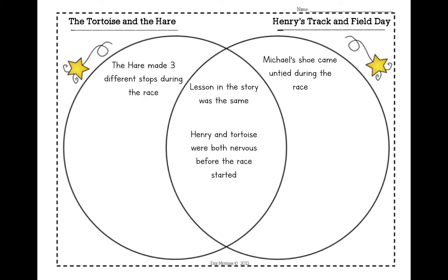So your turn. Now I would like you guys all to try and make it so you have three events in each part of the diagram. So you have three events for Henry's track and field day, three things that were the same, and three things that happened in only the tortoise and the hare. You can use the ones I put, but try and come up with some of your own too. Good luck.